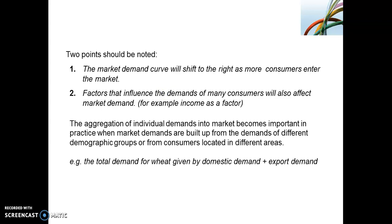The aggregation of individual demands into a market demand becomes very useful in practice when market demands are built up of demands from different demographic groups or consumers located in different areas. For instance, the total demand for a product such as wheat could be given by domestic demand as well as export or foreign demand, making up the total demand. Similarly, you can look at total demand for a product and see how it is built up from individual demands, based on demographic factors or regions.